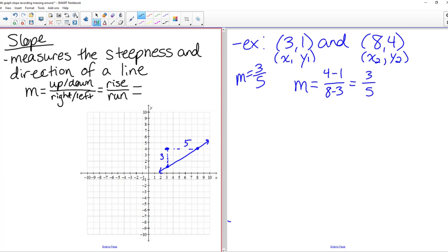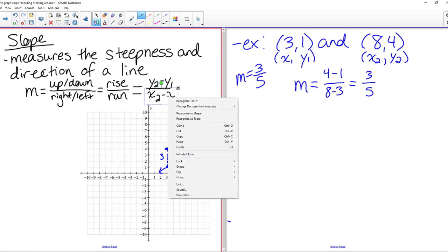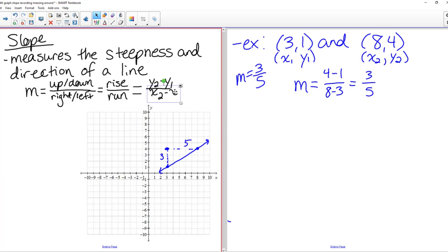So next to where I have rise over run, I'm going to put another definition for slope. So this is another formula, m equals, basically on top, it's always going to be the difference of the y values. So just like we did 4 minus 1, that's y2 minus y1 on top. And on the bottom, 8 minus 3, we did x2 minus x1.